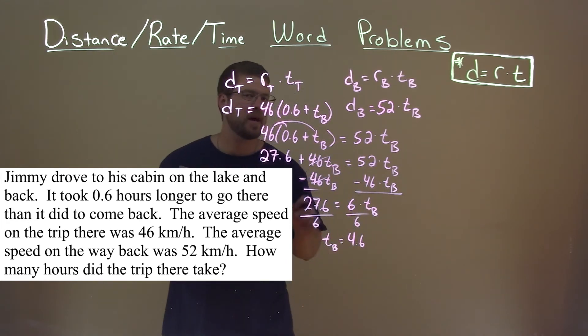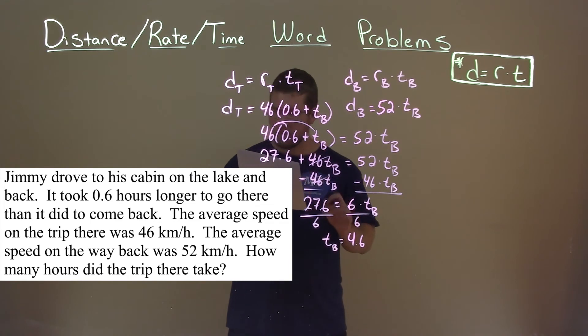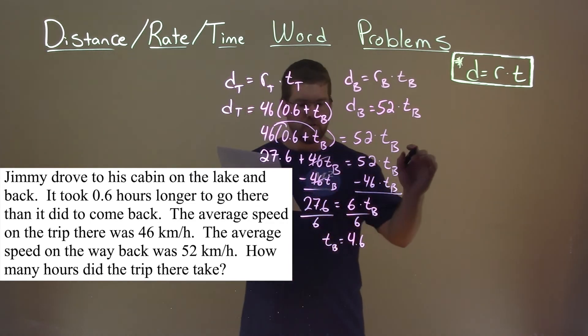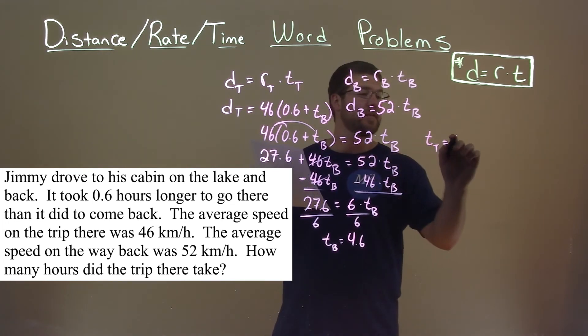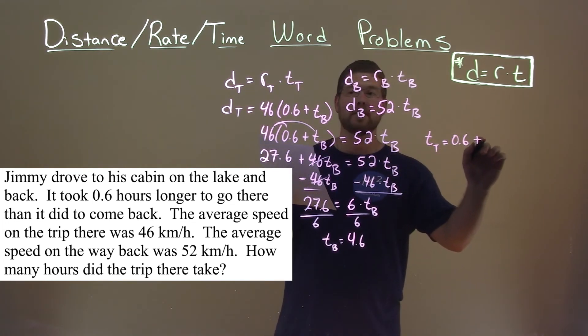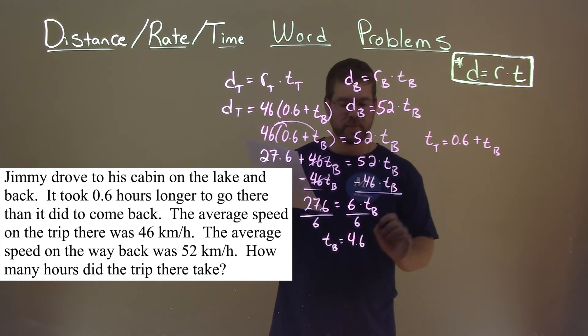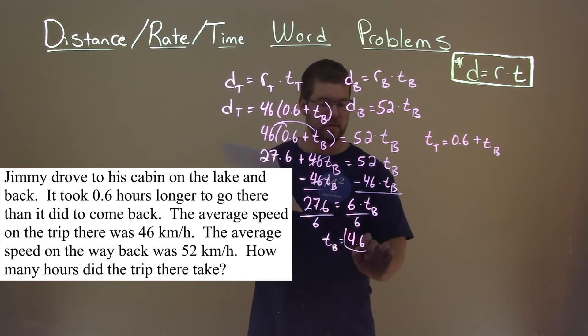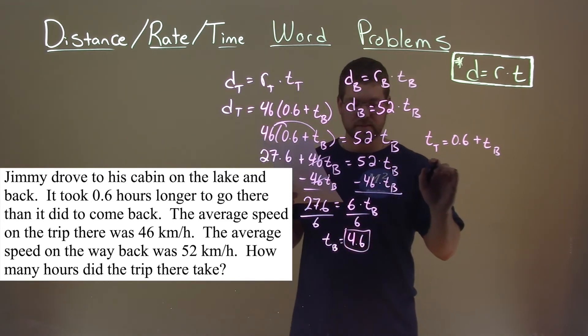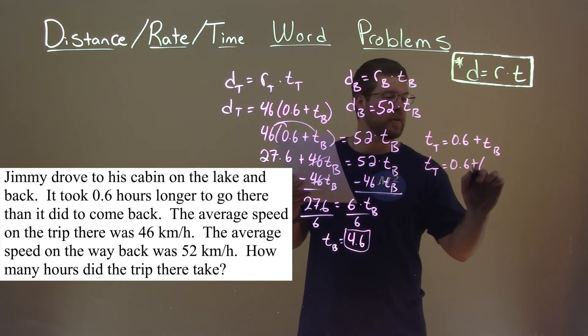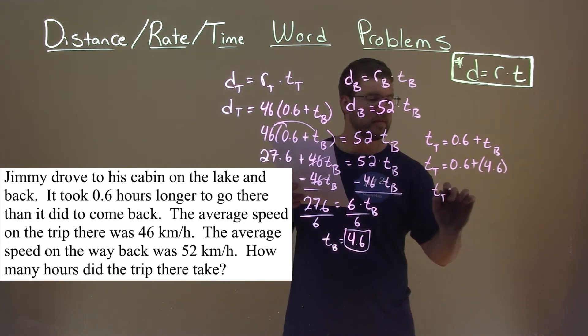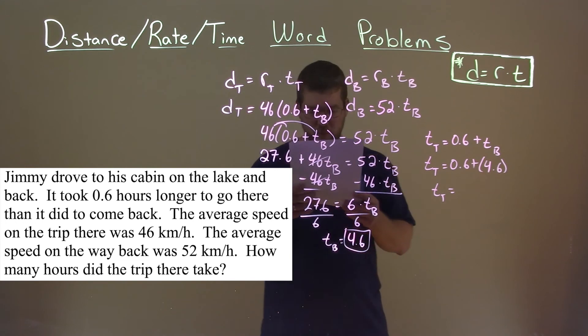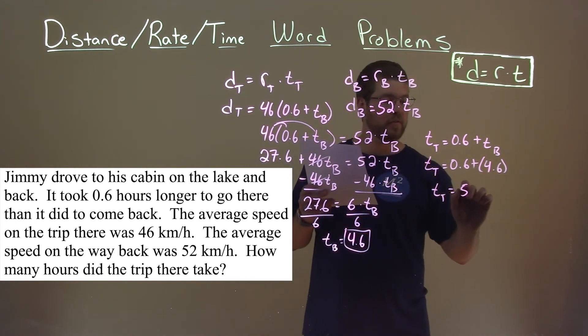But that's the time back. They're asking us how long it would take to go there. We know that the time there is equal to 0.6 plus the time back. Time back was 4.6, so time there is equal to 0.6 plus 4.6 hours, and 0.6 hours plus 4.6 is a total of 5.2 hours.